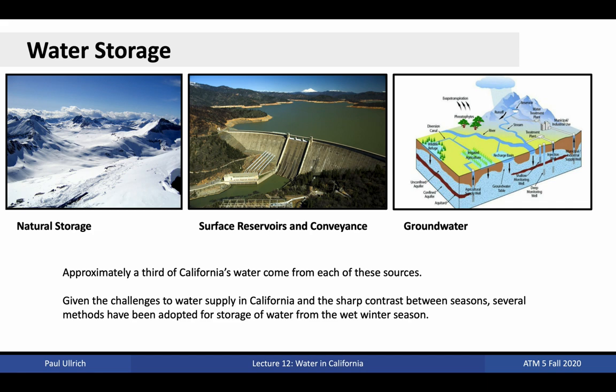Besides conveyance, California water is also managed via water storage. There are three major mechanisms for holding water, including natural storage, surface reservoirs and conveyance infrastructure, and groundwater. Natural storage includes snowpack, lakes, and rivers. Surface reservoirs are artificial lakes built to contain water. And groundwater refers to water under the ground, primarily in regions of porous rock or sand, known as aquifers. Given the challenges in maintaining water supply in California and the sharp contrast between seasons, all these methods are heavily utilized in managing California's water.